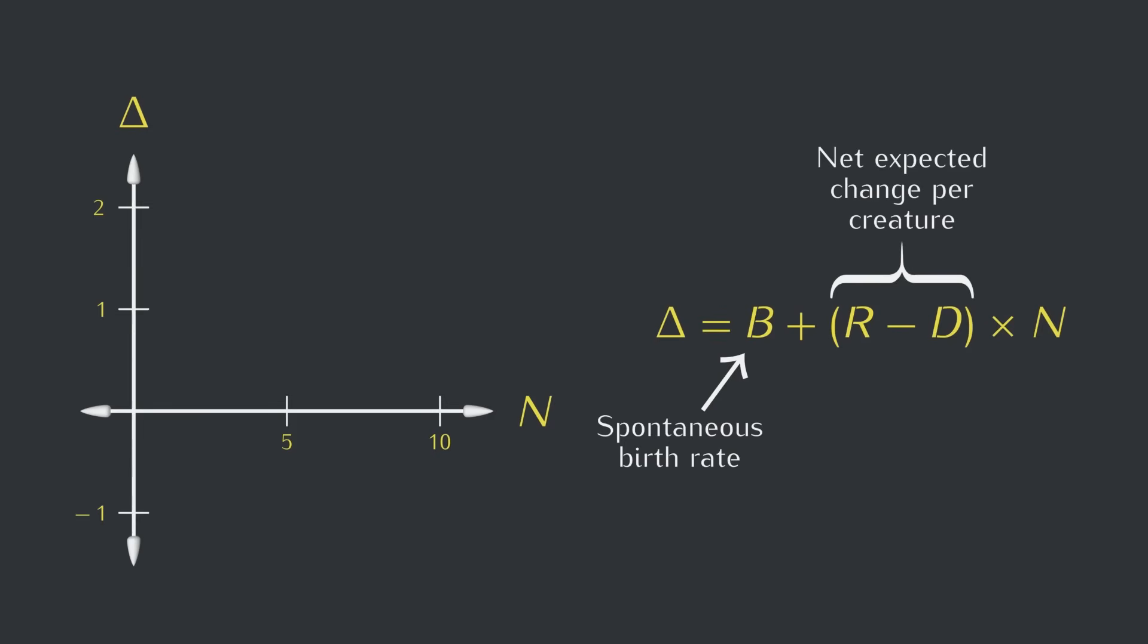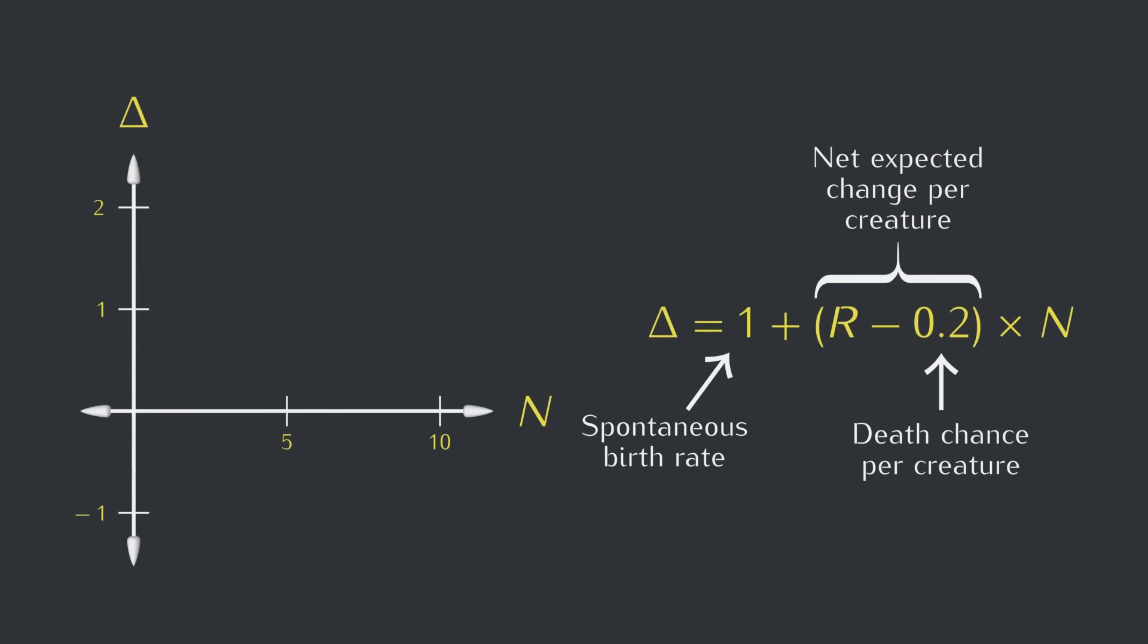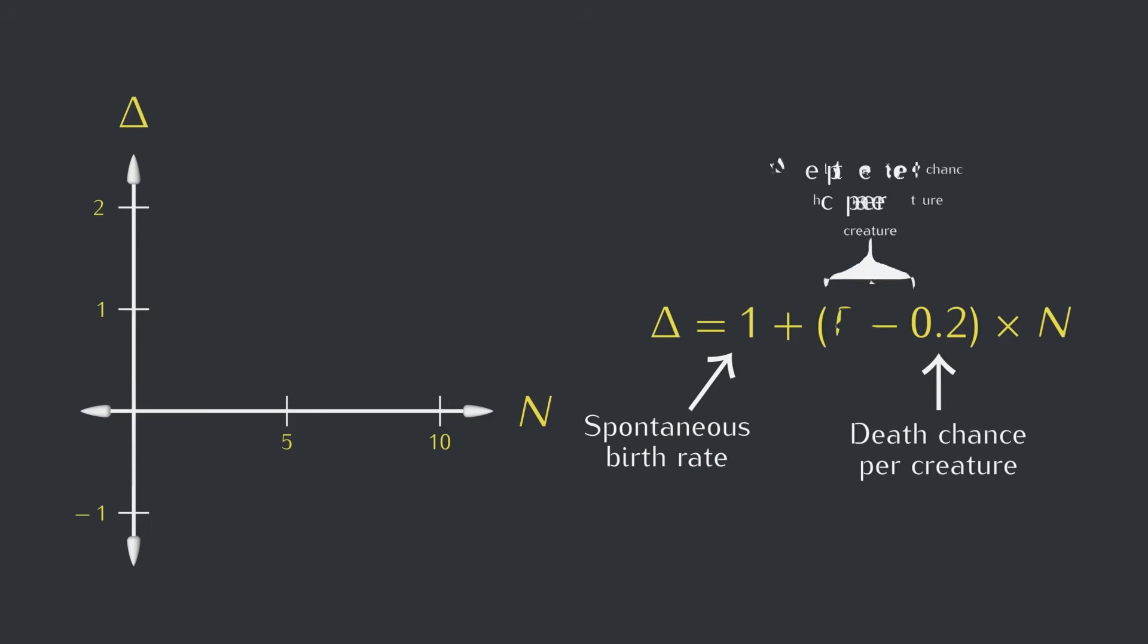Let's make the spontaneous birth rate 1, so each time step will see one brand new creature pop into existence on its own. The death chance for each creature will be 0.2, so each living creature will have a 1 in 5 chance of dying each time step, and to start out, let's leave the replication chance at 0.